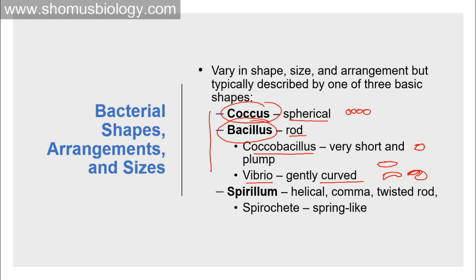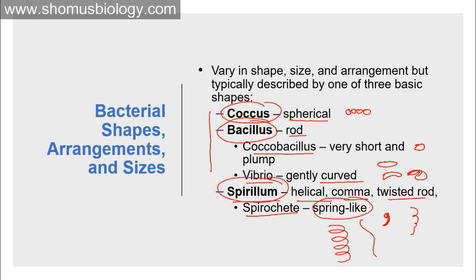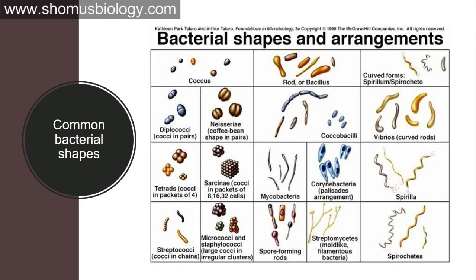Apart from these, there is another shape — spiral or helical — we call them spirilla. It can be helical-shaped or comma-shaped, like a twisted rod. Spirochetes are spring-like structures. These are the different shapes of bacteria that are available, and bacterial shapes and arrangements give them different names.